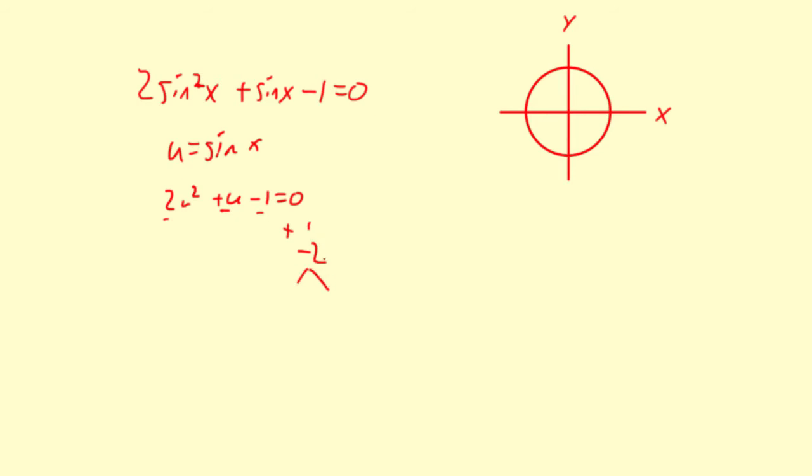So they have to multiply to make negative 2 and add to make plus 1. So that is 2 and then negative 1. So I'm going to have 2u squared plus 2u minus u minus 1 equals 0.